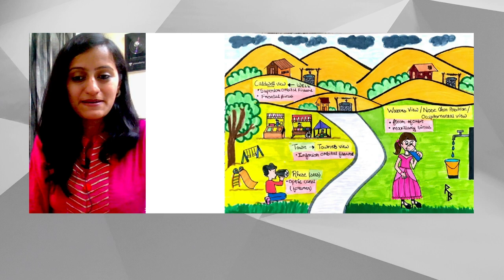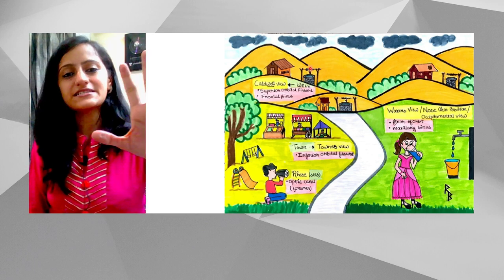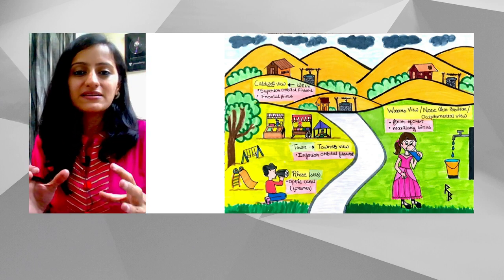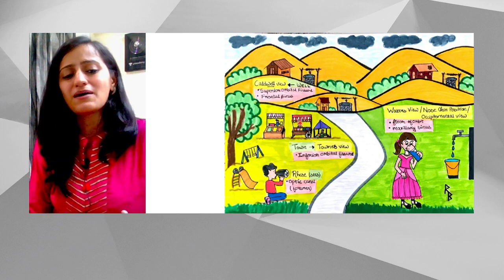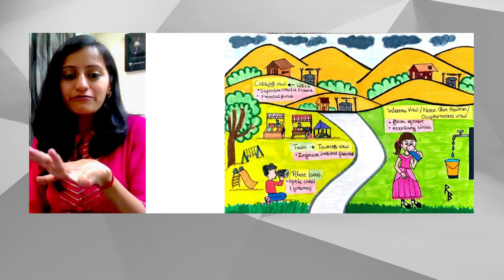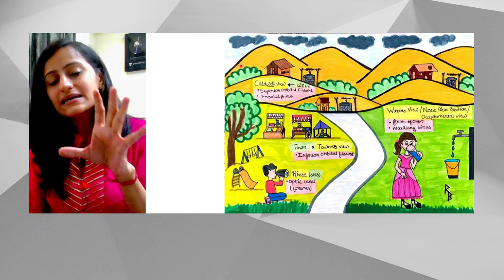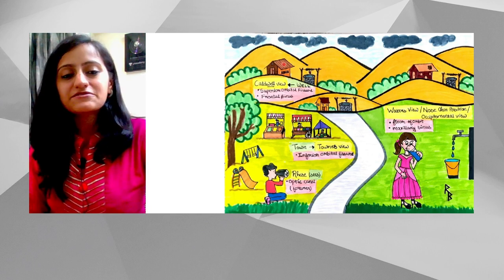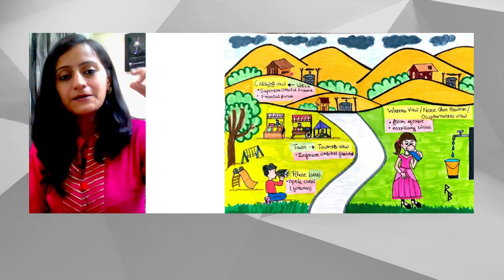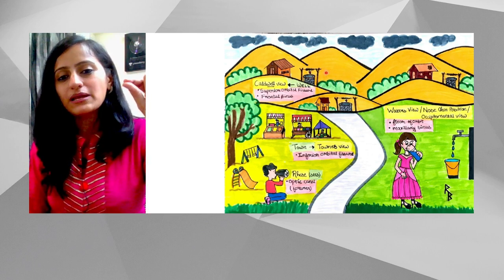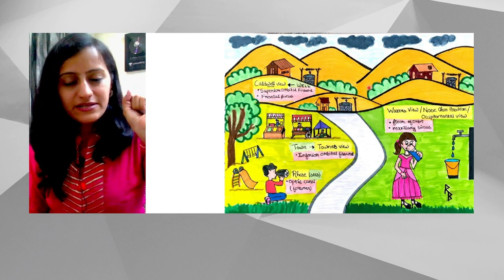Let's start with our story mnemonic. Imagine there is a hilly town. The main town — with the market area, shopping places, tourist places, gardens, and parks — is located in the lower part, inferiorly. The hills, the superior part, is where the houses are. People stay there, and in front of each house we have a well.